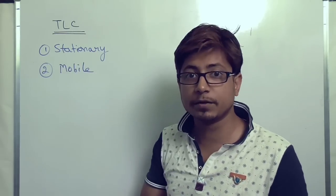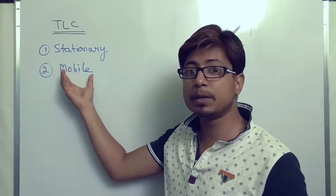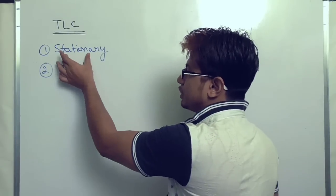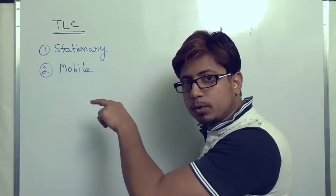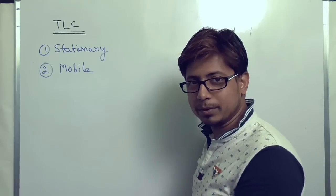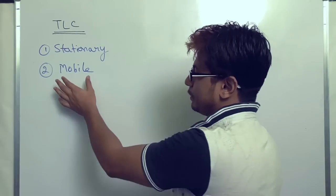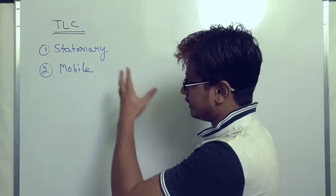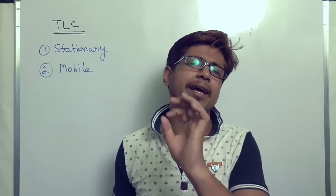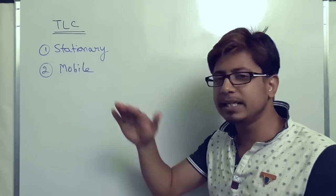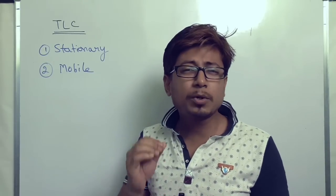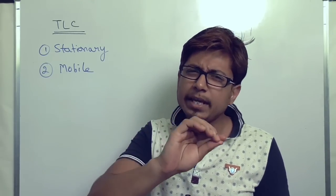The mobile phase is most of the time non-polar, because silica is a polar material. Generally we choose a non-polar mobile phase if we have a polar stationary phase. And if you have a non-polar stationary phase, then you use a polar mobile phase. But most of the time in TLC the stationary phase is polar and the mobile phase is non-polar. Now, why is it called thin layer? Because the silica is coated over the aluminium foil as a very thin coat.